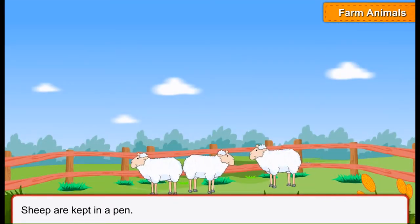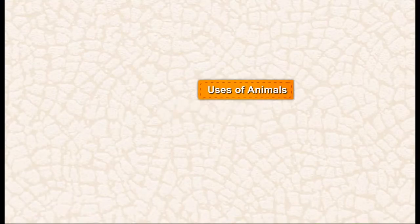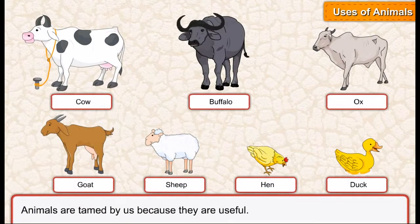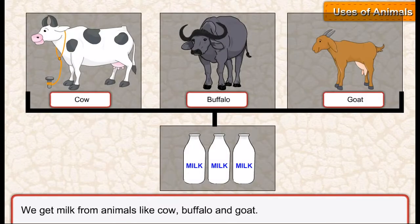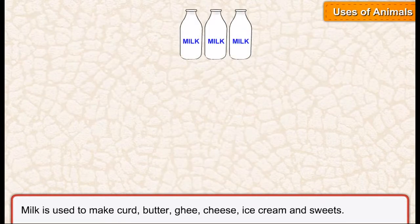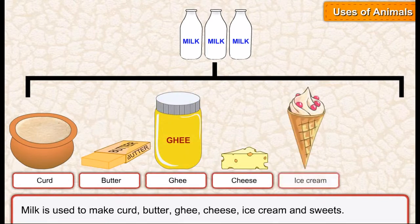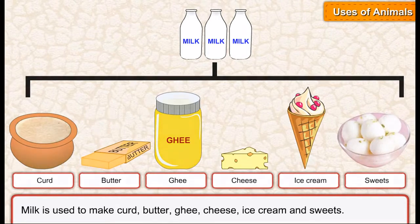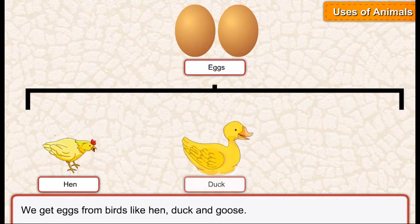Sheep are kept in a pen. Uses of animals — animals are tamed by us because they are useful. We get milk from animals like cow, buffalo, and goat. Milk is used to make curd, butter, ghee, cheese, ice cream, and sweets. We get eggs from birds like hen, duck, and goose.